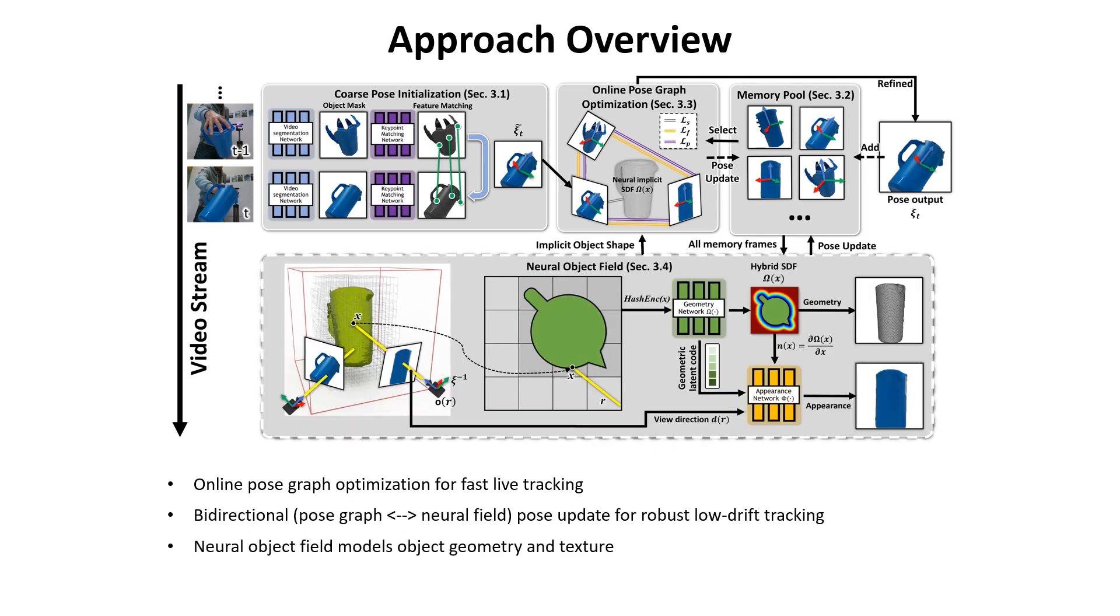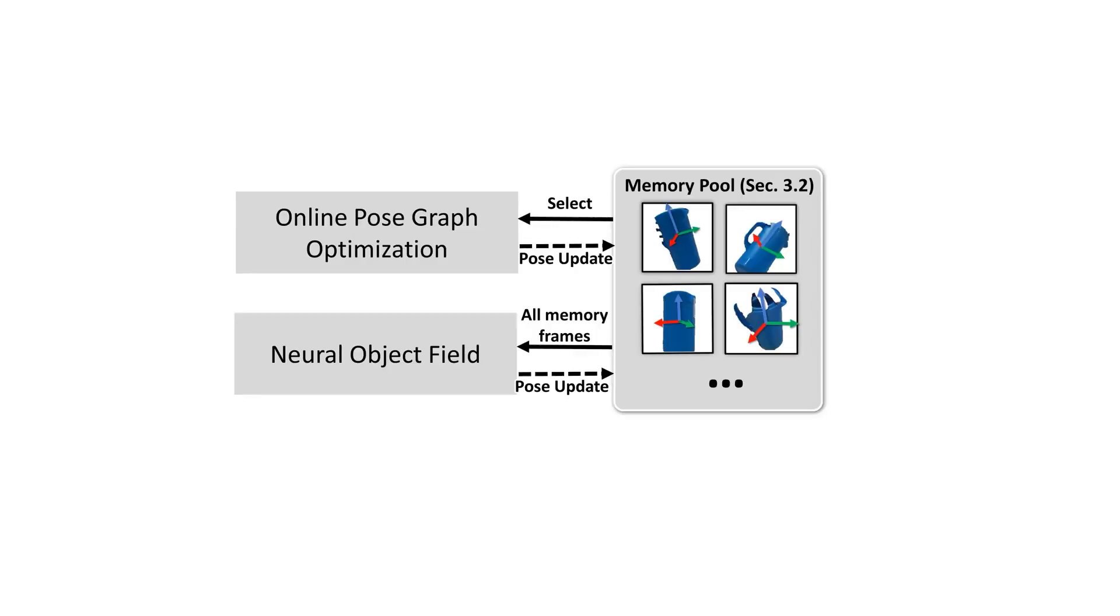On another thread, neural object field models the object's geometry and texture. It fetches the frames and their previously estimated poses from the memory pool. The neural object field is trained per scene without any pre-training, so it generalizes to novel unseen objects. The memory frame's poses are also trained and updated to the memory frame pool to reduce long-term tracking drift. In particular, the bidirectional data exchange between the pose graph and the neural field is the key for robust tracking.